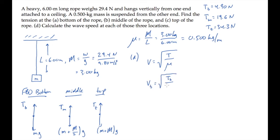We know all of these values, so we just need to substitute them. At the bottom of the rope, we find the wave speed is 3.13 meters per second.